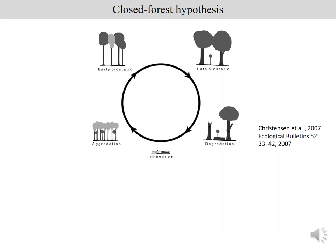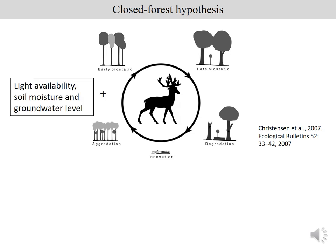Looking for the reasons why natural regeneration of oak is missing, we found hypotheses in the literature. One is the closed forest hypothesis, which says that gaps in the degradation phase of a stand are the right place for natural regeneration. But in oak forests, no regeneration is found in gaps, and the main causes cited are high game pressure, light availability, soil moisture, groundwater level, competitive species, or additive effects of these.